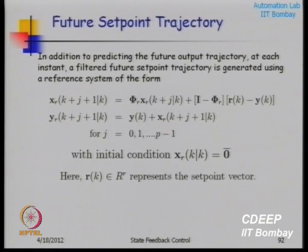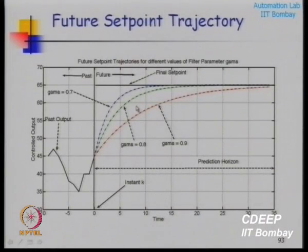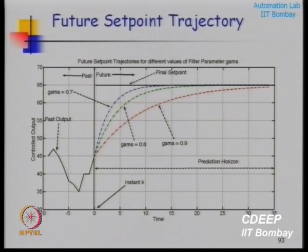The matrices S_X, S_U, and S_E come from stacking all prediction equations and factoring out the inputs. S_U will have dimension (number of outputs × prediction horizon) by (number of inputs × control horizon). For example, with 5 outputs and prediction horizon 100, and 5 inputs with control horizon 10, this gives a 500×50 matrix. This matrix S_U is often called the dynamic matrix, and its columns consist of the system's impulse response coefficients.